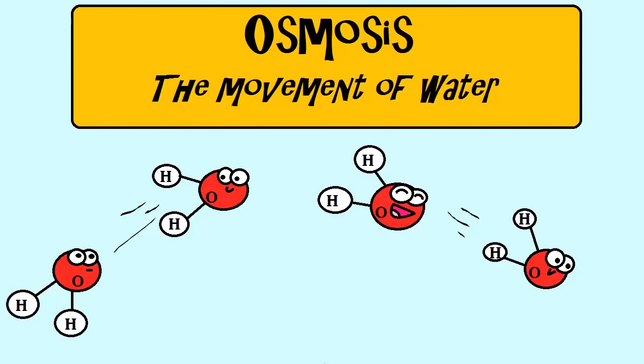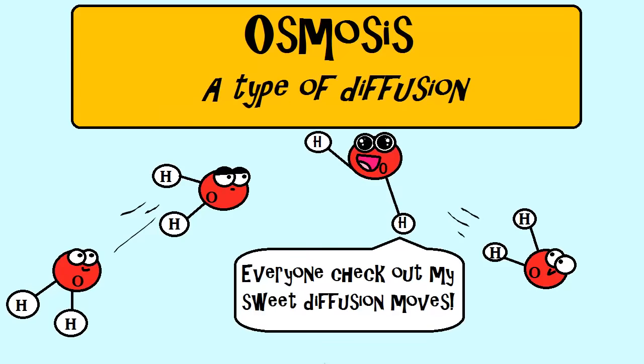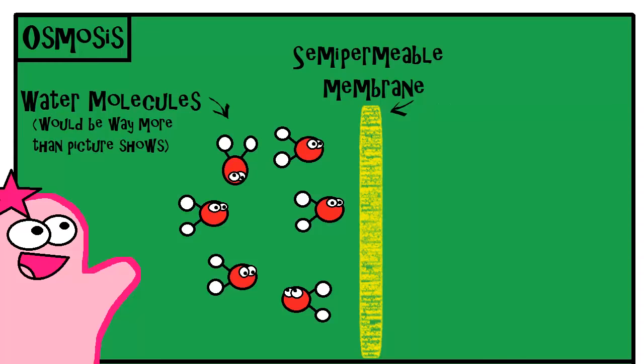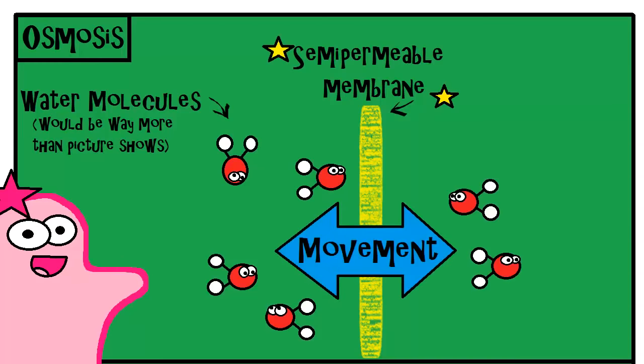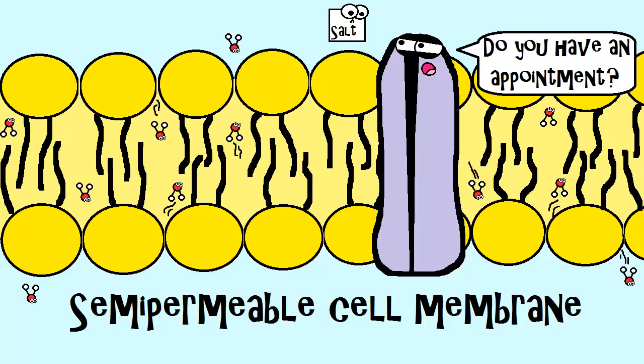First understand that osmosis is the movement of water, and that really is a type of diffusion. Often when you're talking about osmosis, you're talking about the movement of water through a semi-permeable membrane like a cell membrane. A cell membrane has openings small enough for water molecules to pass, but it will not allow larger things like salt molecules to freely pass.